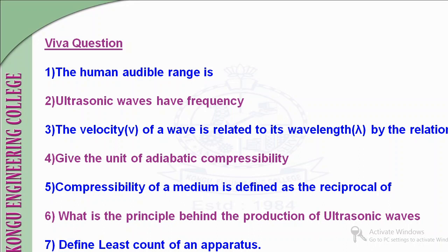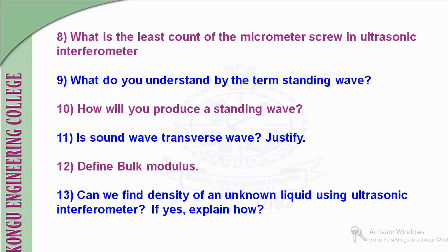Least count is the smallest value that can be measured by a particular instrument. The least count of the micrometer screw in the ultrasonic interferometer is found using: LC = pitch / number of head scale divisions, which gives 0.01 mm.